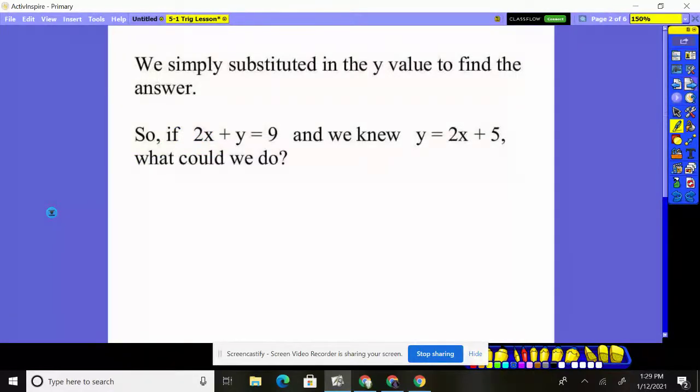So we simply substitute the y value to find out the answer. So if 2x plus y is 9, and we knew y equals 2x plus 5, what could we do then? So we have this equation they gave us, and instead of saying y equals 5 or 6 or 7, it gave me an expression. Well, no big deal. I'm going to take that 2x plus 5 and plug it right into that y, because then what happens is you no longer have y's. You have the whole equations with x's, and then you can solve it.